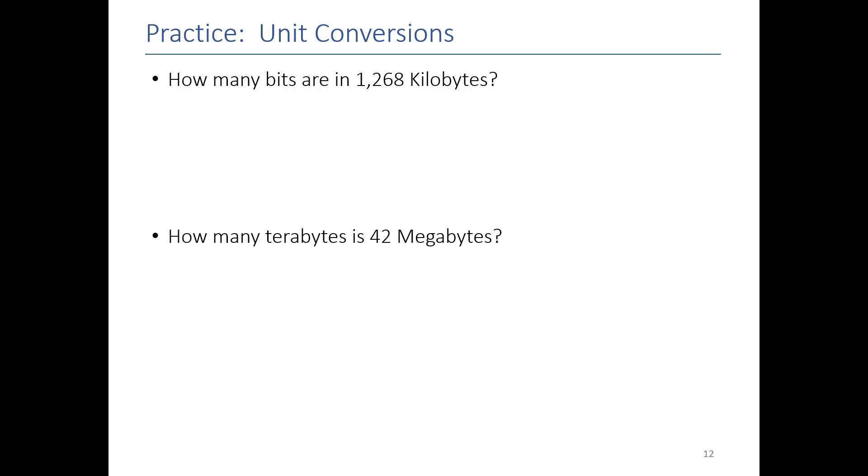Alright, let's go through them. So, let's say that I have 1268 kilobytes, and I want to find out how many bits there are. The magic numbers are 1024 and 8. Remember that. So, if I want to convert from kilobytes to bytes, there are 1024 bytes per kilobyte. So, that gets me to bytes, and then there are 8 bits per byte. So, that makes sense. I'm going from kilobytes to a smaller unit of measurement, so my number ends up being bigger.